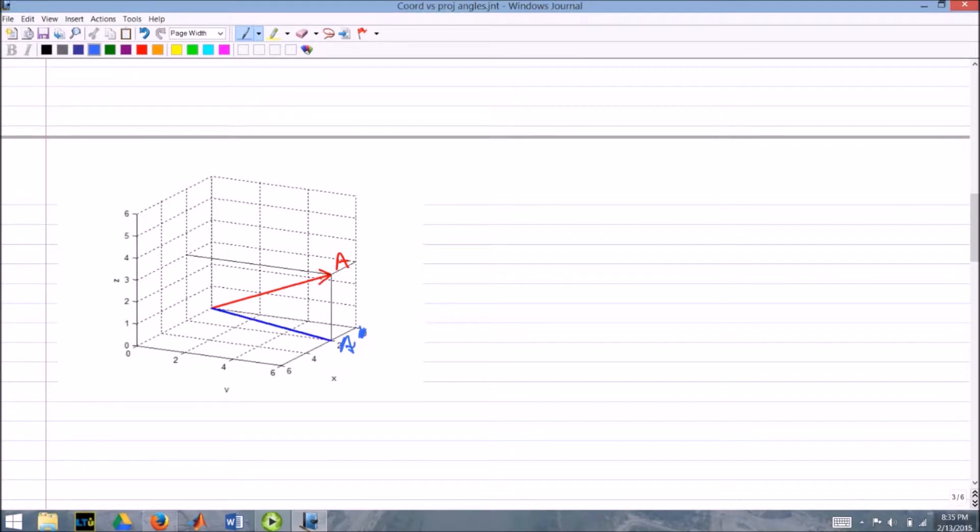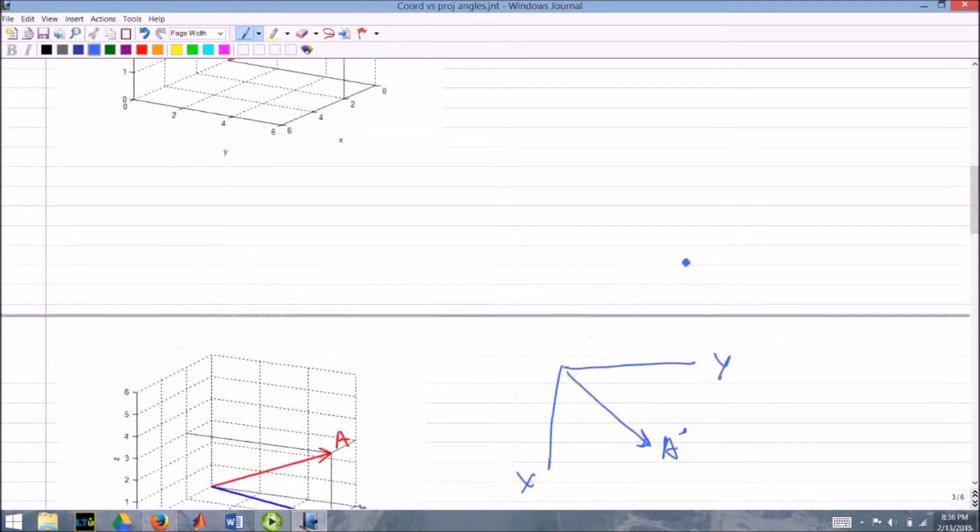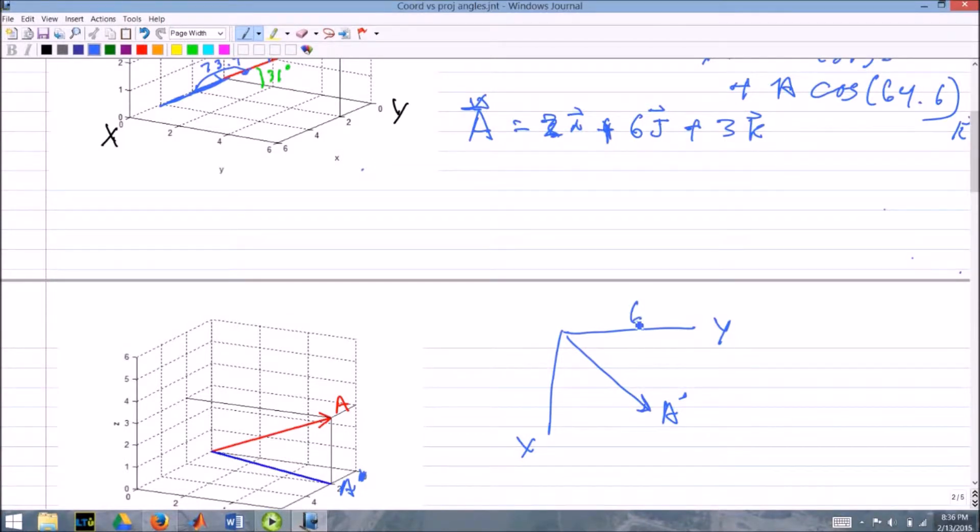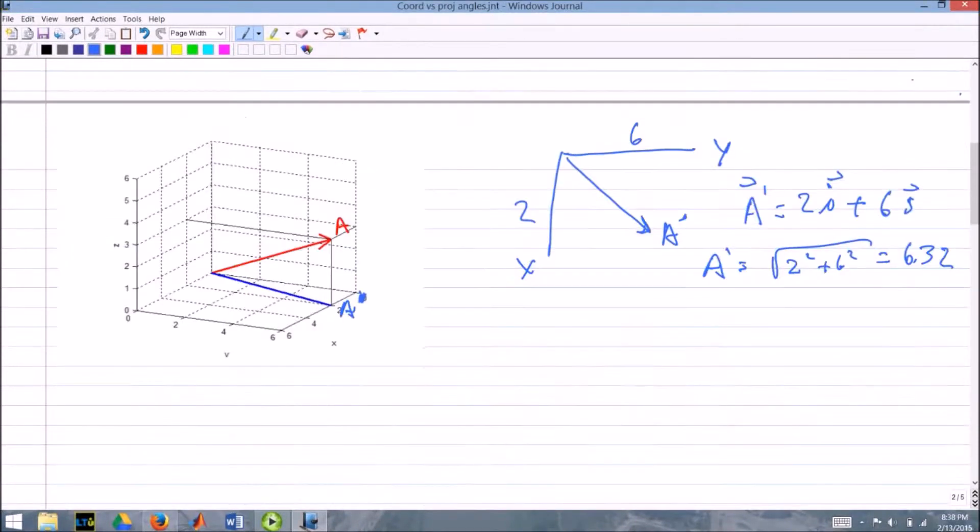If we look at it straight from above, this is the x and the y, tipping it downward. Drawing that A prime vector, I know from my Cartesian coordinates I have 6 in the y direction, 2 in the x direction. So A prime equals 2i plus 6j. The magnitude of A prime equals the square root of 2 squared plus 6 squared, which equals 6.32.